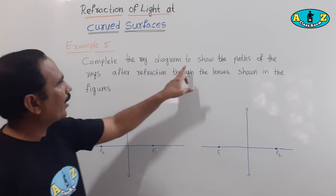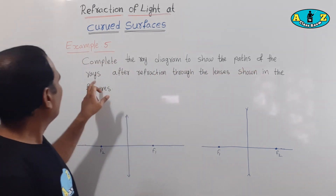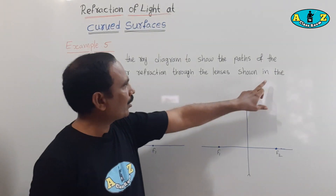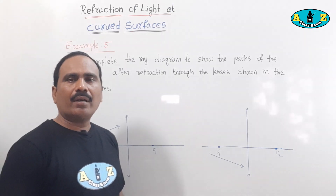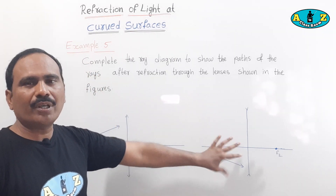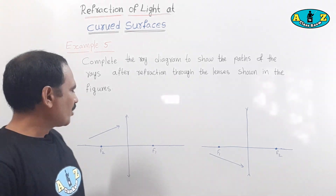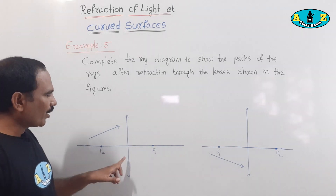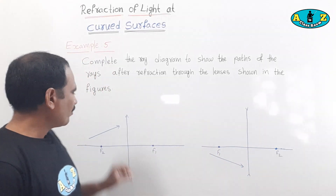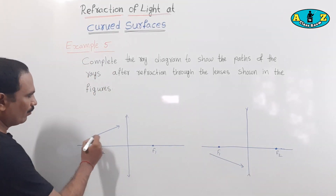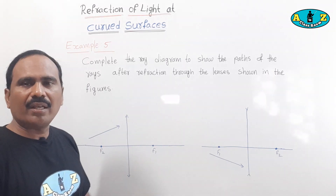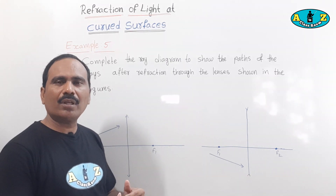Now, complete the ray diagrams to show the paths of rays after refraction through the lens shown in the figures. Two ray diagrams are given — one for a convex lens and one for a concave lens. We should complete these ray diagrams. Observe the convex lens first — one ray is passing through it. How to complete this ray diagram? We follow the previous method.